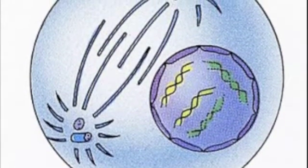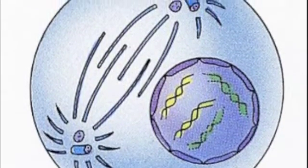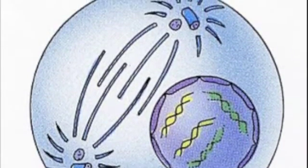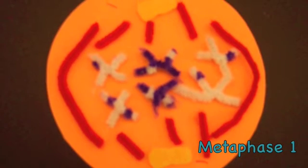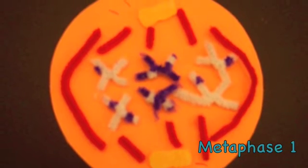Microtubules connect the centrosomes to one another and centrosomes begin to move toward opposite ends of the cell. The cell then moves into metaphase I. In metaphase I, chromosomes line up by homologous pairs along the metaphase plate. Kinetochore microtubules attach to both chromatids in each pair.